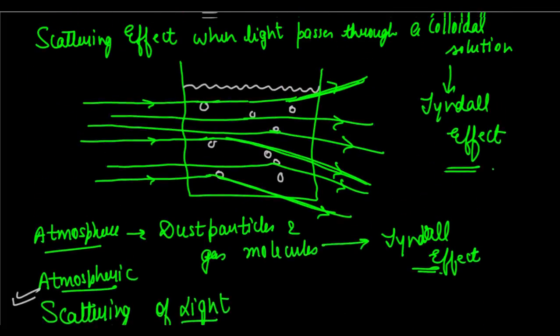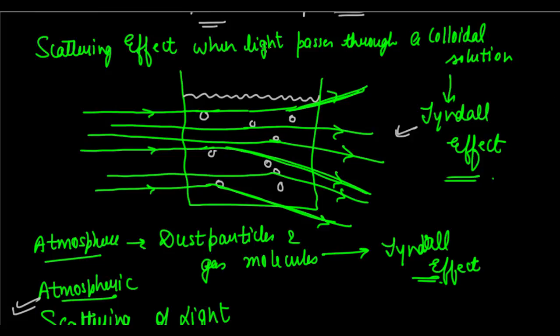The second important part is the Tyndall effect, seen when light is passed through a colloidal solution — the colloidal particles collide with the light particles and scatter the light in different directions. An example of a colloidal solution is milk. If you pass light through milk — milk with some water — it will scatter the light. So the Tyndall effect and atmospheric scattering of light were the topics of this lecture. In the next lecture, we will discuss the colour of the sky and why the sun appears reddish at sunrise and sunset and white at noon.